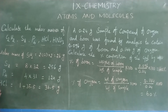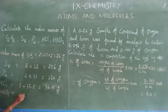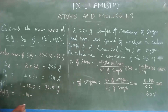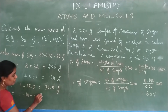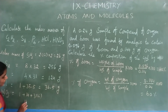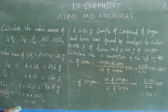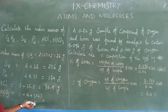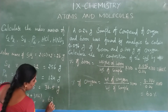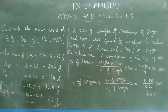For HNO3 (nitric acid): 1 hydrogen = 1, 1 nitrogen = 14, 3 oxygen = 3 × 16 = 48. Total = 1 + 14 + 48 = 63 grams. So the molar mass of nitric acid is 63 grams.